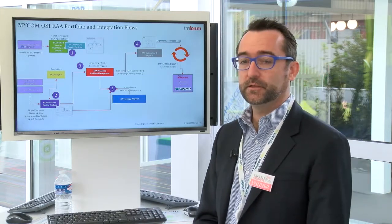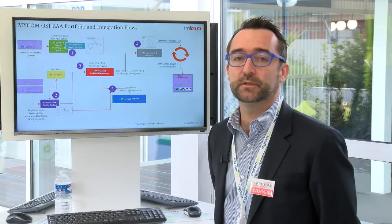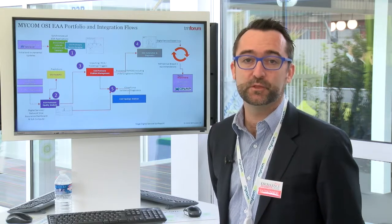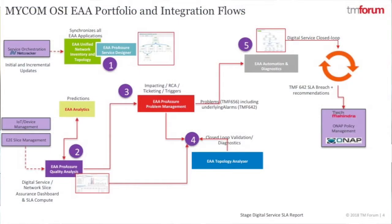Here is a sequence diagram — an integration flow diagram — showing the different EAA products used in this catalyst. We start with the service designer on EAA consuming TOSCA templates coming from the service orchestrator, providing us a structure of the model on which we could aggregate different KPIs and KQIs about the network slice itself and the digital services.